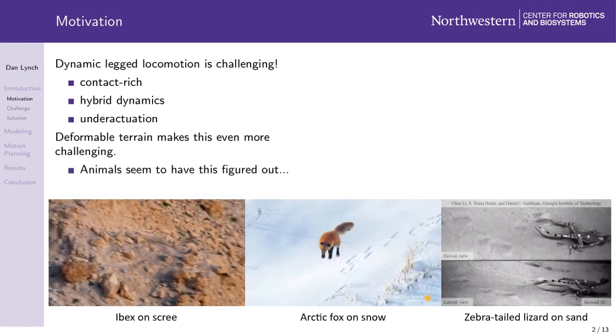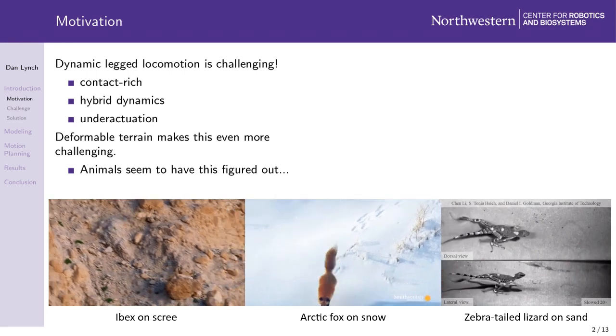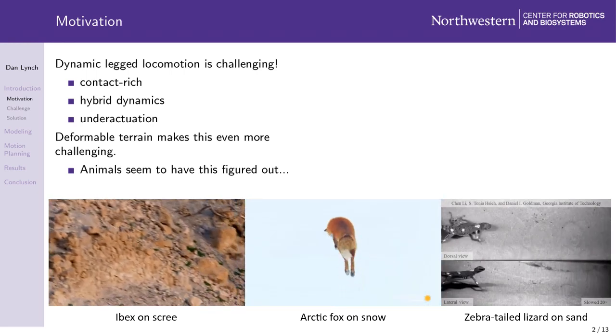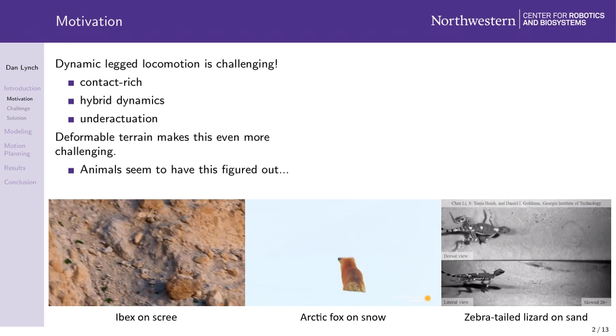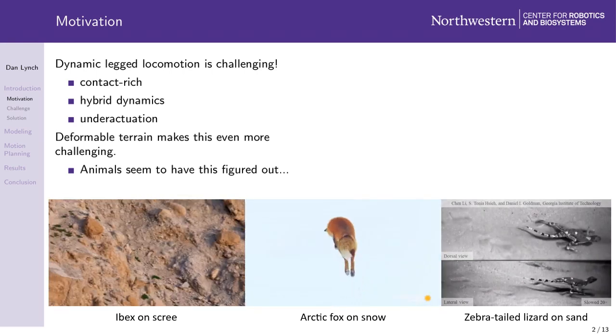Of course, animals seem to have this figured out on a variety of terrain and for a variety of sizes. For example, the ibex can scramble across scree to avoid predators, the arctic fox can jump on snow to hunt for food, and the zebra-tailed lizard can dart across sand to evade robophysicists.